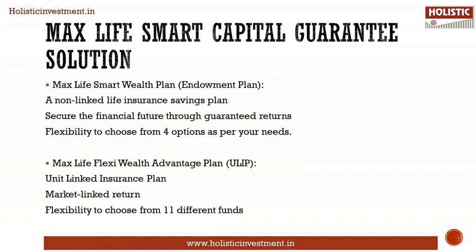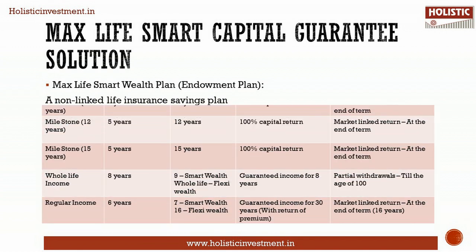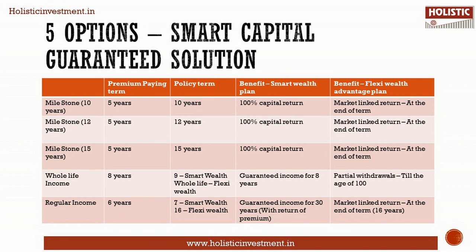The Smart Capital Guarantee Solution is a combination of a ULIP and a non-participating traditional savings plan. The premium paid is split and invested under two plans: the first is the Smart Wealth Plan, which is an endowment policy, and the second is the Flexi Wealth Advantage Plan, which is a ULIP. Next, we shall move on to the features of Smart Capital Guarantee Solution.